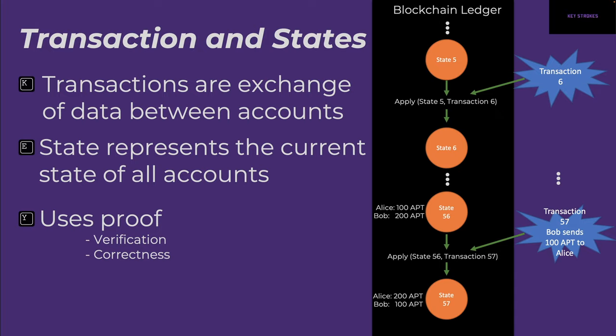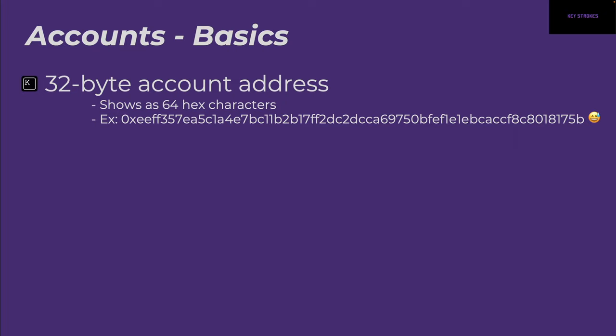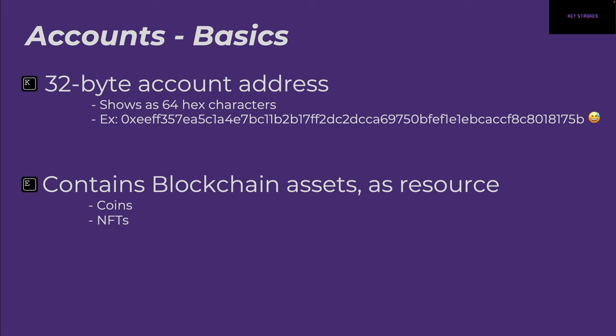Let's talk about how accounts work. Accounts are 32-byte account addresses shown as 64 hexadecimal characters — you can see an example on screen, which is very hard to remember or compare. An account can contain blockchain assets stored as a resource, and they can be coins or NFTs. This resource concept comes from the Move language, which the Aptos blockchain uses — it's very similar to Rust for Solana.